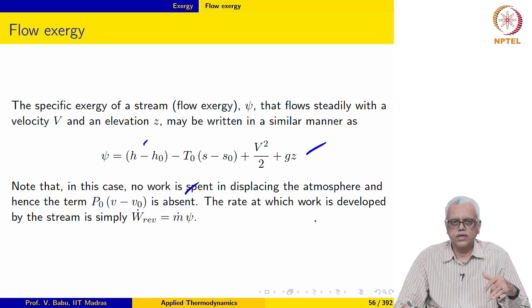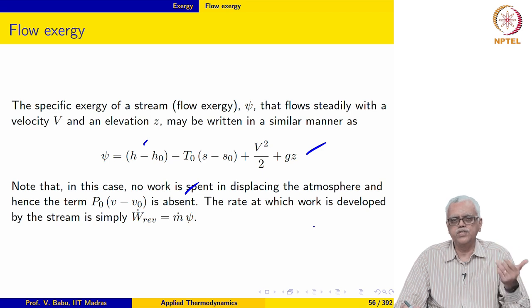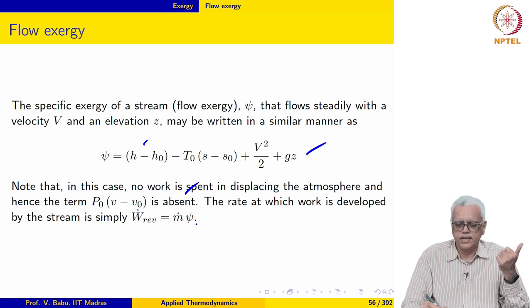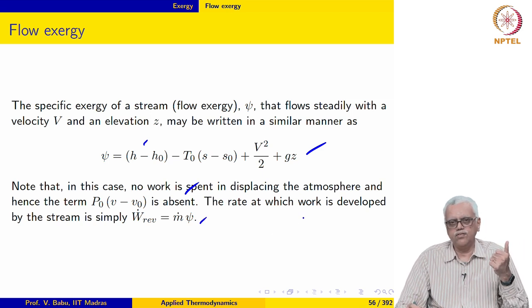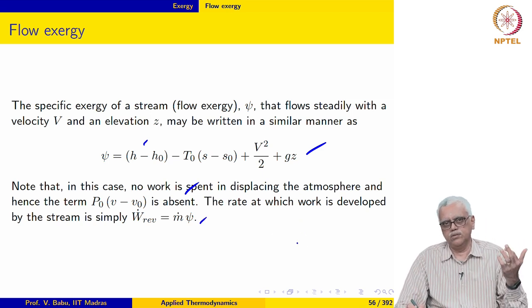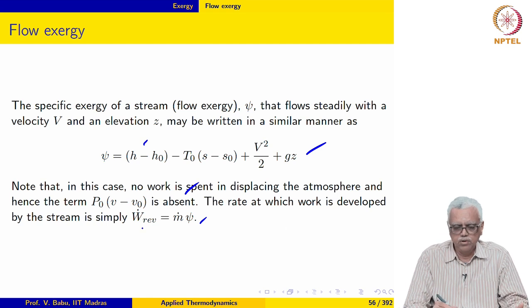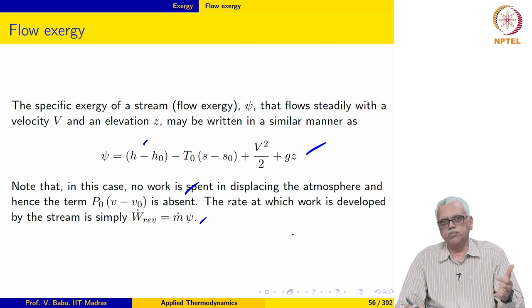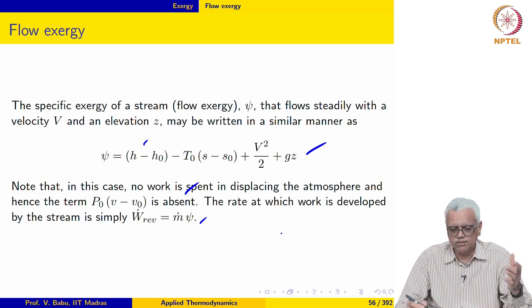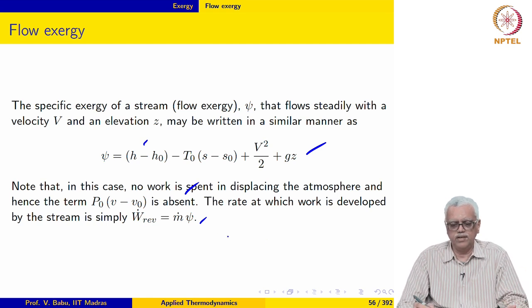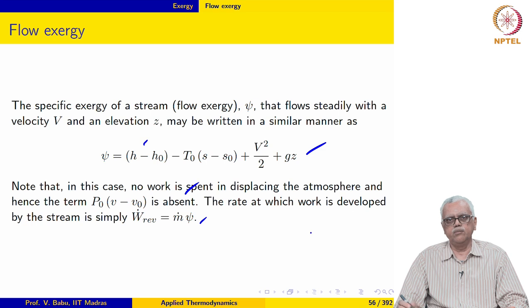So the specific exergy for a flow process replaces specific internal energy with h and the V minus V naught term is absent. This is of course specific exergy. If there is a mass flow rate M dot, then W dot reversible — the maximum power that can be developed — would be M dot times psi.